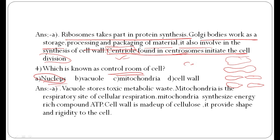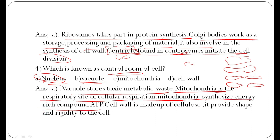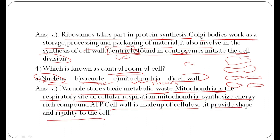What is the CPU of the cell? Vacuole stores toxic metabolic waste — that is its vacuolar function. Mitochondria is the respiratory site of cellular respiration; it synthesizes the energy-rich compound ATP — energy formation and respiration. Mitochondria is also known as the powerhouse of the cell. Cell wall is made up of cellulose; it provides shape and rigidity to the cell in plant cells.